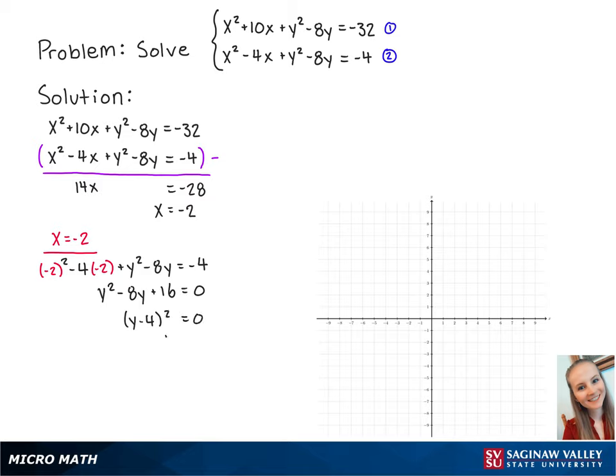Now we can see that y is equal to 4. Now that we have our x and y values, we can see that the intersecting point is at negative 2, 4.